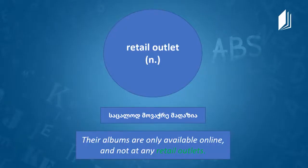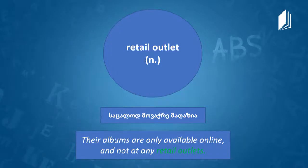The next word is retail outlet. Retail outlet is a noun — a shop or store. You might have retail outlets all over town. Example: 'Their albums are only available online and not at any retail outlet' — meaning they are not sold in shops. Now that we've finished with the words, it's time to move on to the reading.